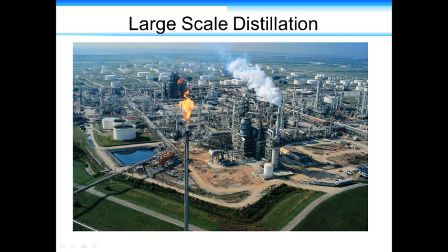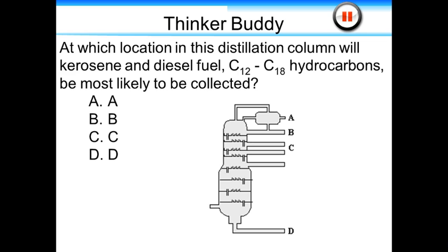ThinkerBuddy question: At which location in this distillation column will kerosene and diesel fuel — C12 to C18 hydrocarbons — be most likely collected? A is at the very top of the column, B is just below that, C is just below that, and at the very bottom of the column is D.